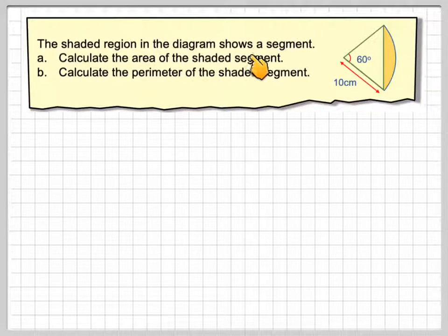The shaded region in the diagram shows a segment. Calculate the area of the shaded segment and calculate the perimeter of the shaded segment.